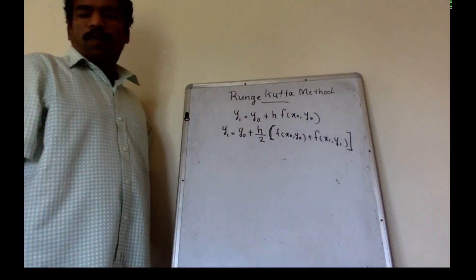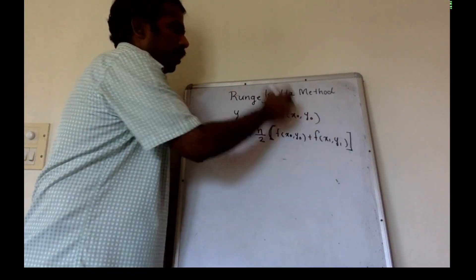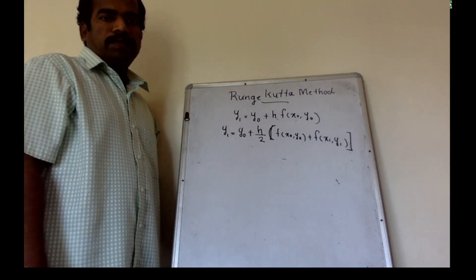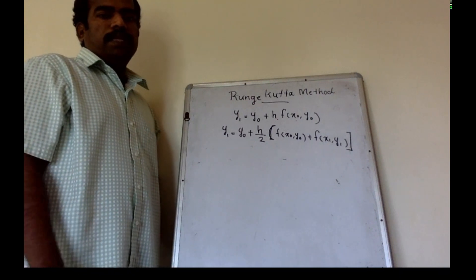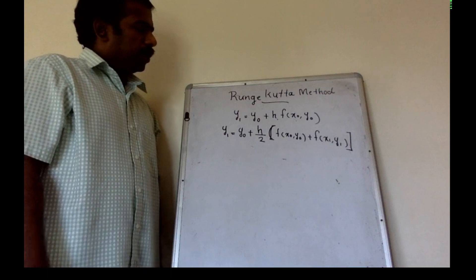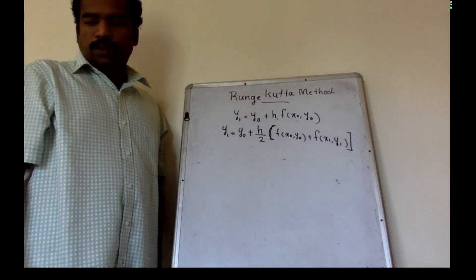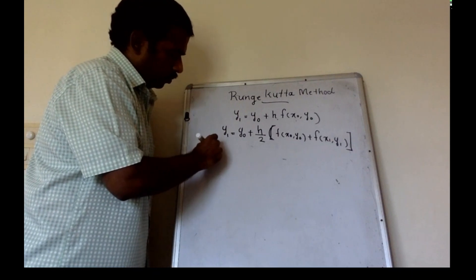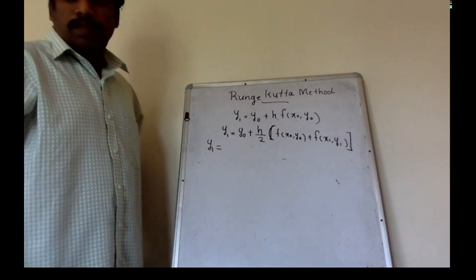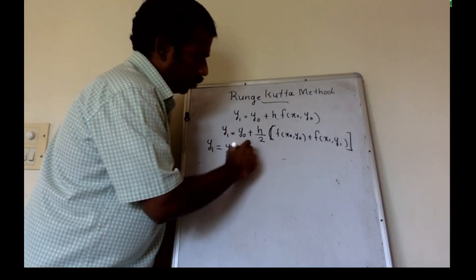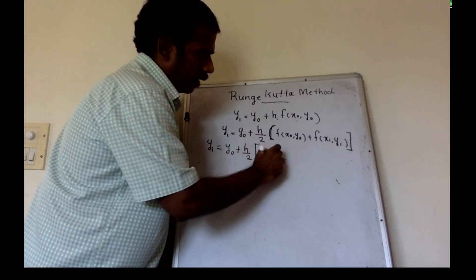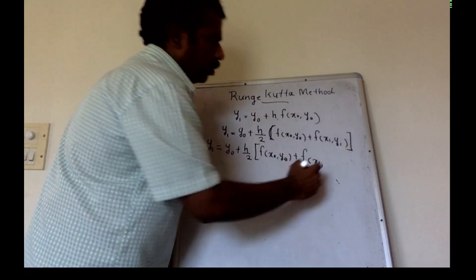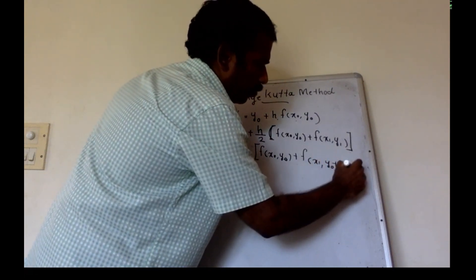This is the modified OLS method. So, what is y1? y1 equal to y0 plus h by 2 into f of x0, y0 plus f of x1, y1, into y0 plus h into f of x0, y0.